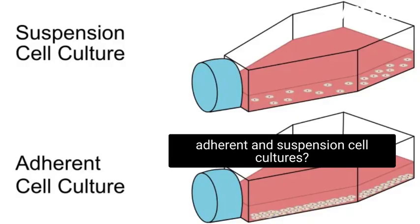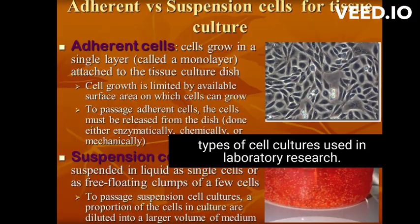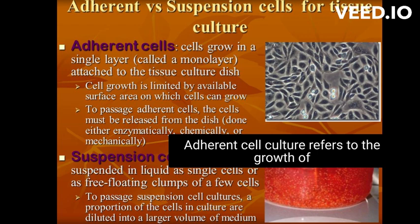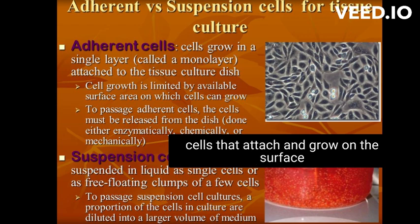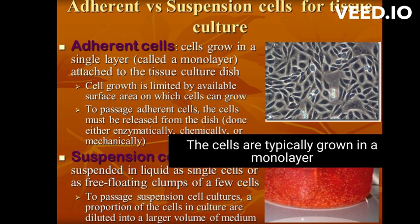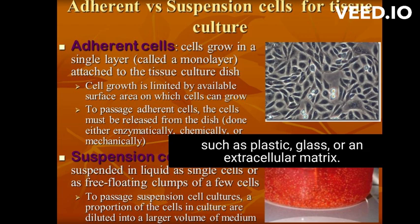What are the differences between adherent and suspension cell cultures? Adherent and suspension cell cultures are two different types of cell cultures used in laboratory research. Adherent cell culture refers to the growth of cells that attach and grow on the surface of a culture dish or flask. The cells are typically grown in a monolayer and are in contact with a solid surface such as plastic, glass, or an extracellular matrix.